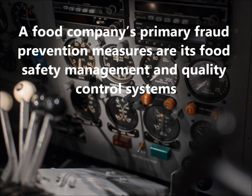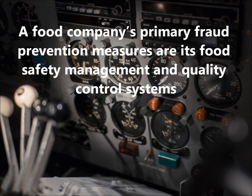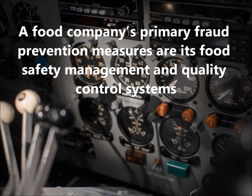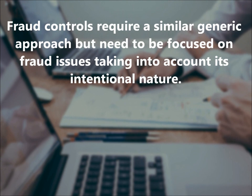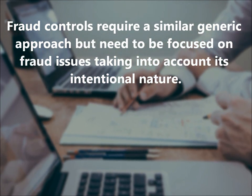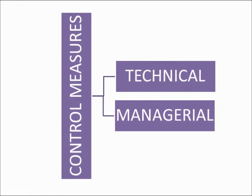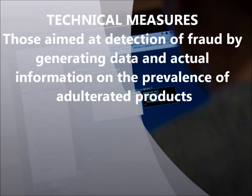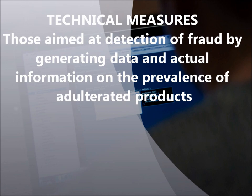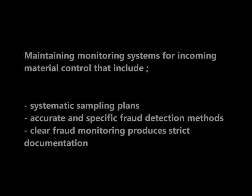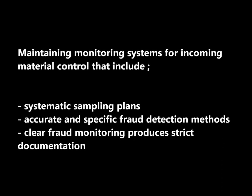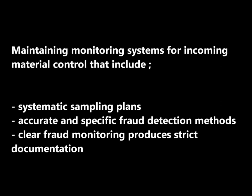Control measures can counteract the vulnerability arising from opportunities and motivations. A food company's primary fraud prevention measures are its food safety management and quality control systems, as well as food quality and safety managers and staff. Fraud controls require a similar generic approach but need to be focused on fraud issues, taking into account their intentional nature. Control measures are subdivided into technical measures and managerial measures. Technical measures refer to those aimed at detecting fraud by generating data and actual information on the prevalence of adulterated products. Maintaining monitoring systems for incoming material control — including systematic sampling plans, accurate and specific fraud detection methods, clear fraud monitoring procedures, and strict documentation — are essential for fraud controls.